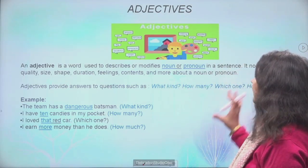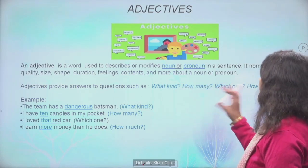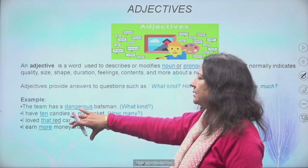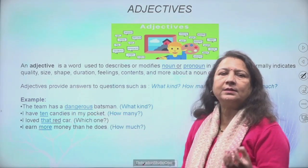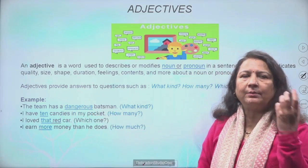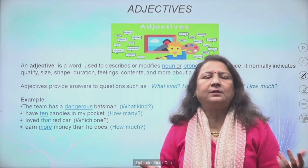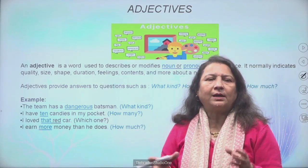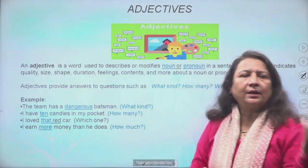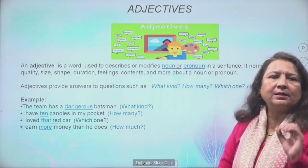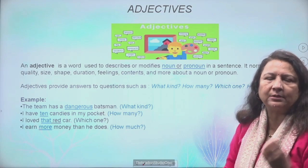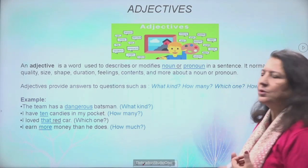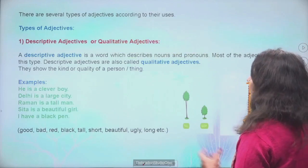Questions kaise hain humari mind mein? What kind, how many, which one, how much? Yahan pe humne examples discuss kiye — jaise ten candies: how many candies? Ya red hai — kaunsi aapko pasand hai? Ya I earned more money, ya dangerous batsman hai, ya good batsman hai — toh kis type ke batsman hain? Is type ke questions humari mind mein aate hain.